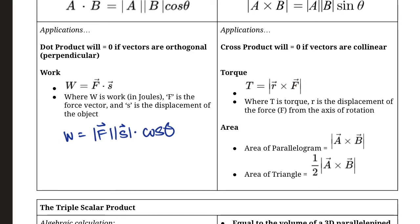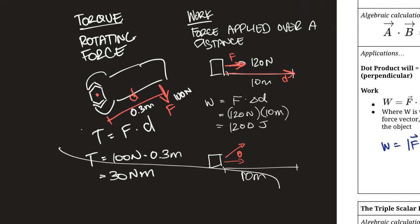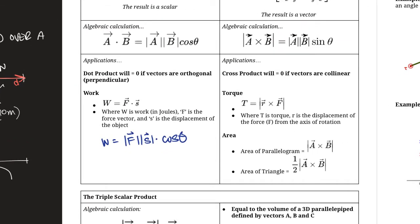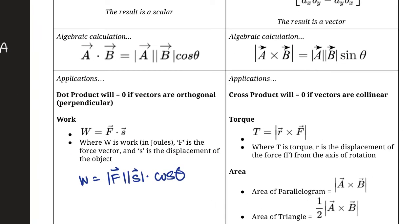The reason the textbook calls it R is that the distance from the center to the force is like a radius. We can express the magnitude of torque as the magnitude of R times the magnitude of the force vector times sine of the angle between those vectors — parallel to how we rewrote the dot product formula.